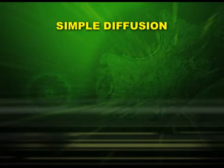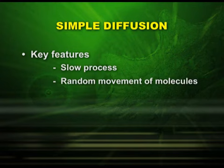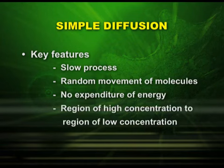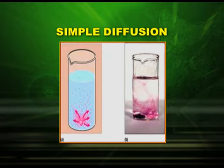Let us first study simple diffusion. The key features are: number one, it is a slow process; there is random movement of molecules; no expenditure of energy; and water moves from a region of high concentration to a region of low concentration. This can be explained with the help of a well-known demonstration. We take two beakers. In one beaker, we put potassium permanganate in water and then observe the diffusion, in which the potassium permanganate crystals diffuse into the water molecules. There is no expenditure of energy, and yet the molecules spread into the water.